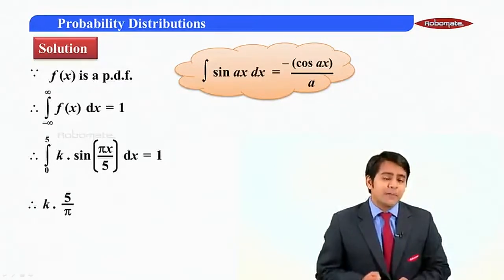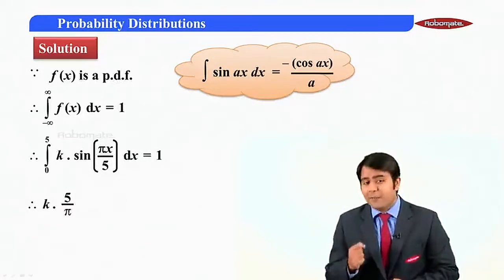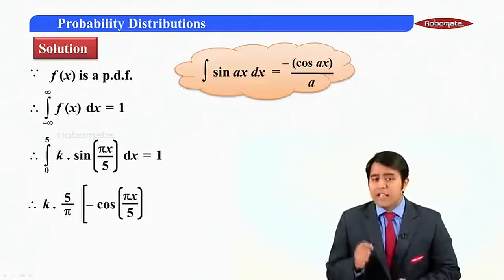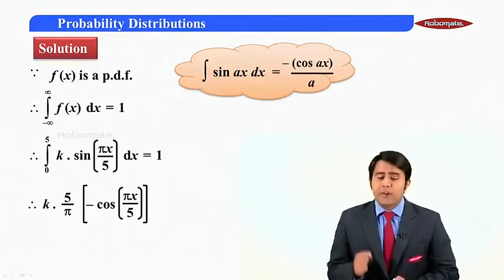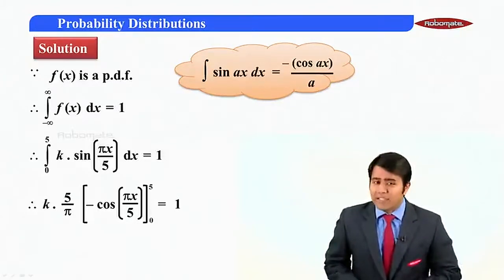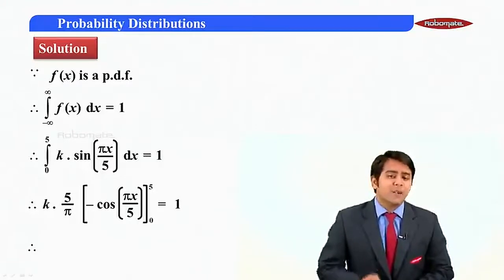Here, a is nothing but pi by phi. And 1 upon pi by phi is nothing but phi upon pi. Into minus of cos pi x upon phi from the interval 0 to phi. This value is equal to 1.